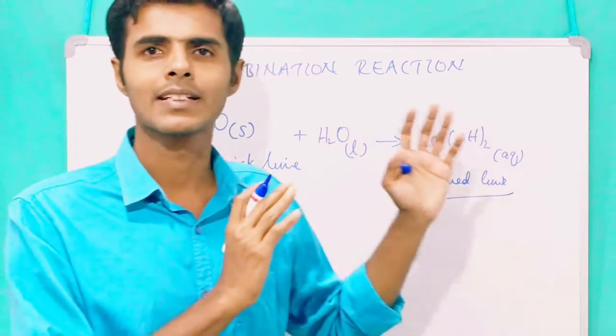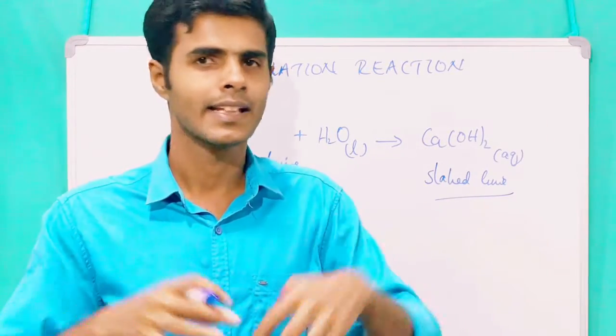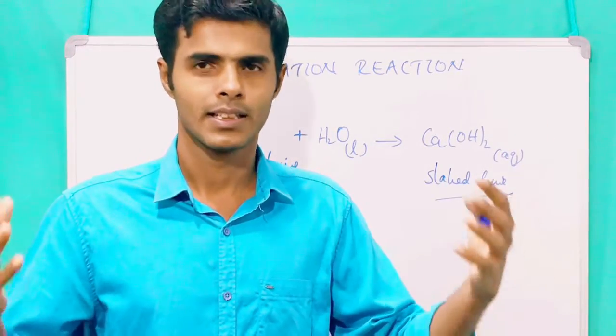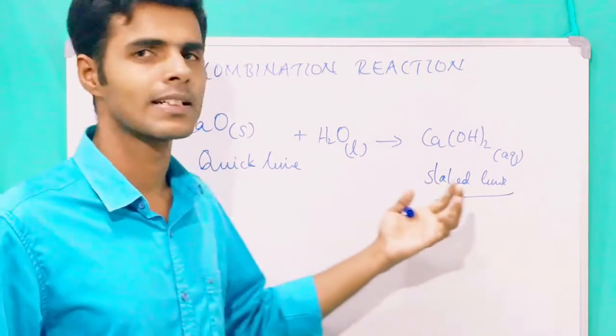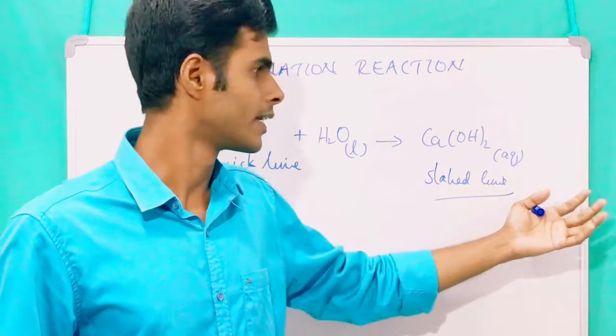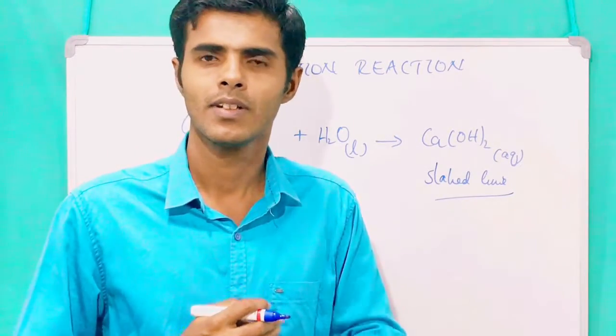So chemical reaction has happened by the combination of two reactants. It can be more than two as I indicated at the beginning. It can be more than two also. So here two reactants combine together to get a product which is calcium hydroxide.